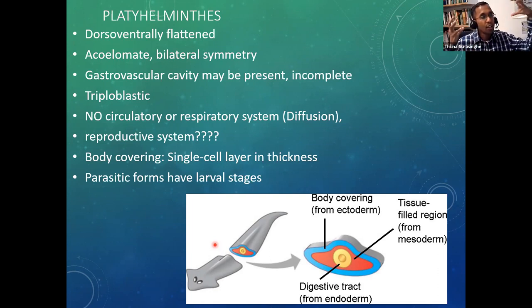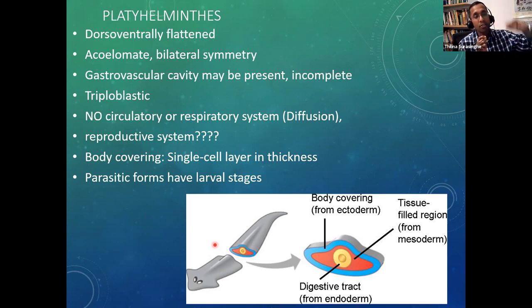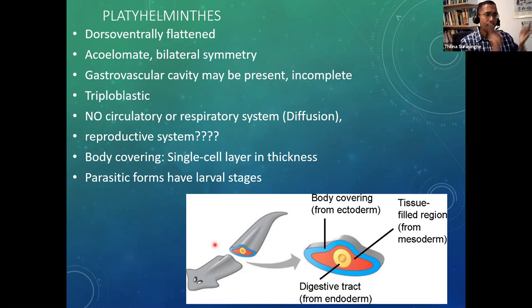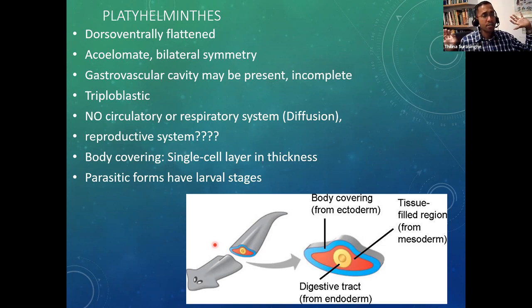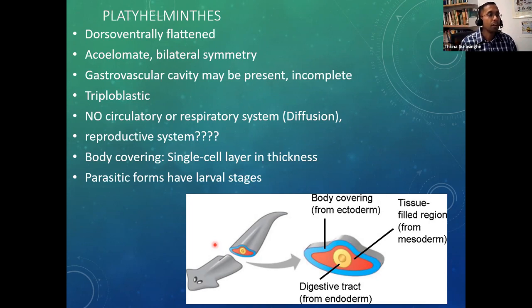They are bilaterally symmetrical — bilateral symmetry evolved several nodes deep in the animal phylogenetic tree. A gastrovascular cavity may be present; some of them do not have a digestive system at all, and when they have one it is incomplete — they do not have a complete digestive tract. They are triploblastic, having three germinal layers.